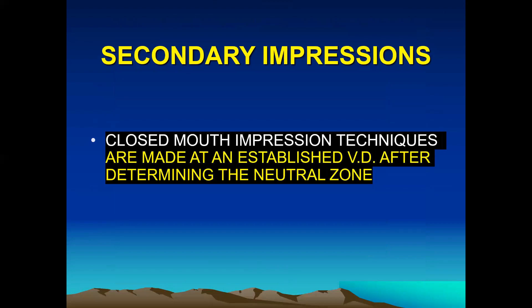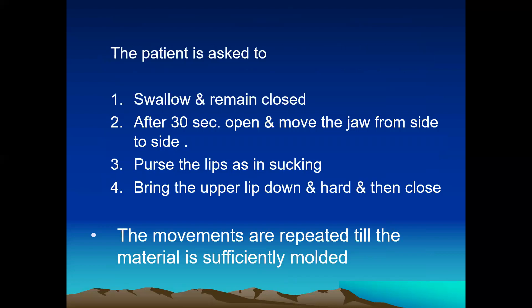Now we have to record the secondary or final impression. For this, the closed mouth impression technique is used rather than the open mouth impression technique, taken at an established vertical dimension after determining the neutral zone. The patient is asked to swallow and remain closed, then after 30 seconds, open and move the jaw from side to side, purse the lips as in sucking, bring the upper lip down, then close. These functional movements are repeated until the material is sufficiently molded and hard.